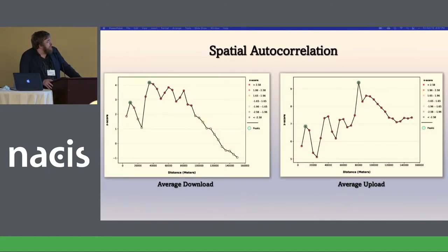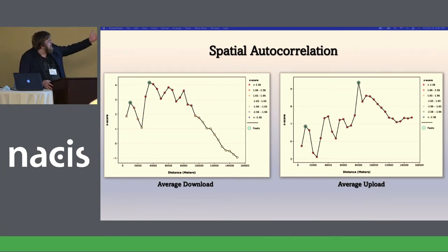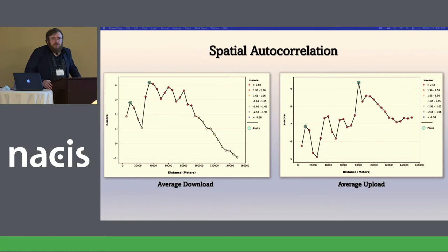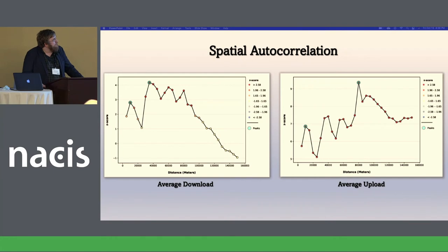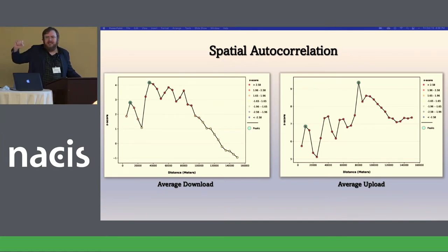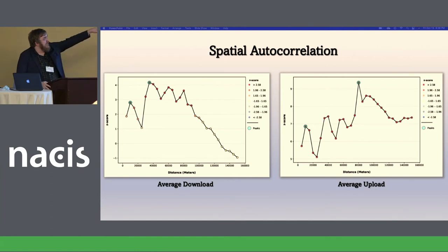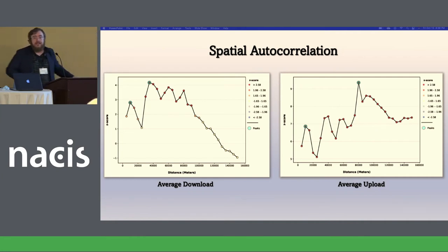Here's some spatial autocorrelation with the variables to figure out how they operate and at what scale. Average download operates around 25,000 meters — that's where there's the most spatial autocorrelation. Upload operates further out, which is probably due to fiber plans giving symmetric 80/80 service, while commercial plans give you something like 25/3. So you have to look at a larger area to find more correlation with those plans. All of the upload is much more correlated than the download.